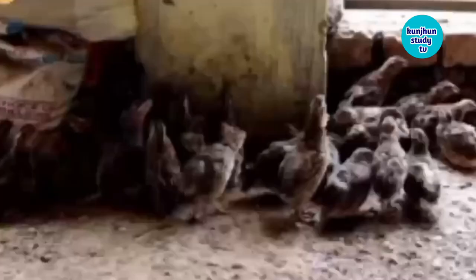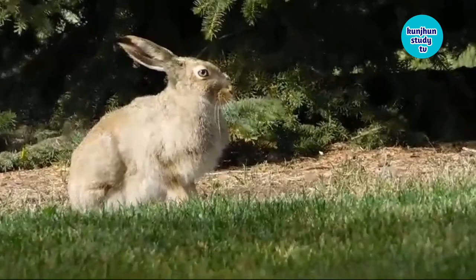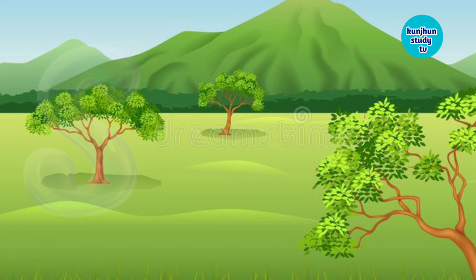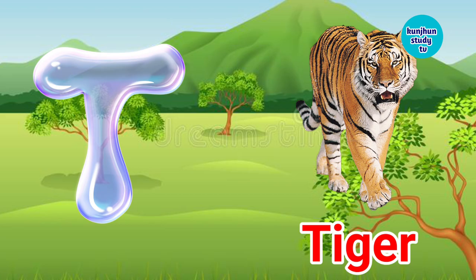R. R for rabbit. Rabbit means khargosh. S. S for sparrow. Sparrow means goraya. T. T for tiger. Tiger means cheetah.